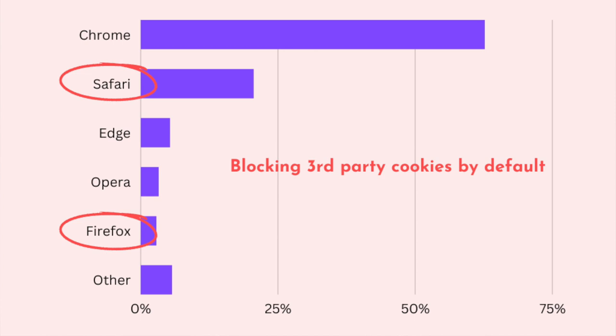The world is going cookie-less and a new era of privacy-friendly digital analytics solutions is upon us. Browsers like Safari and Firefox block third-party cookies by default already today and they own 24% of the market. So this is already happening and you should implement cookie-less solutions now, not one year from now.